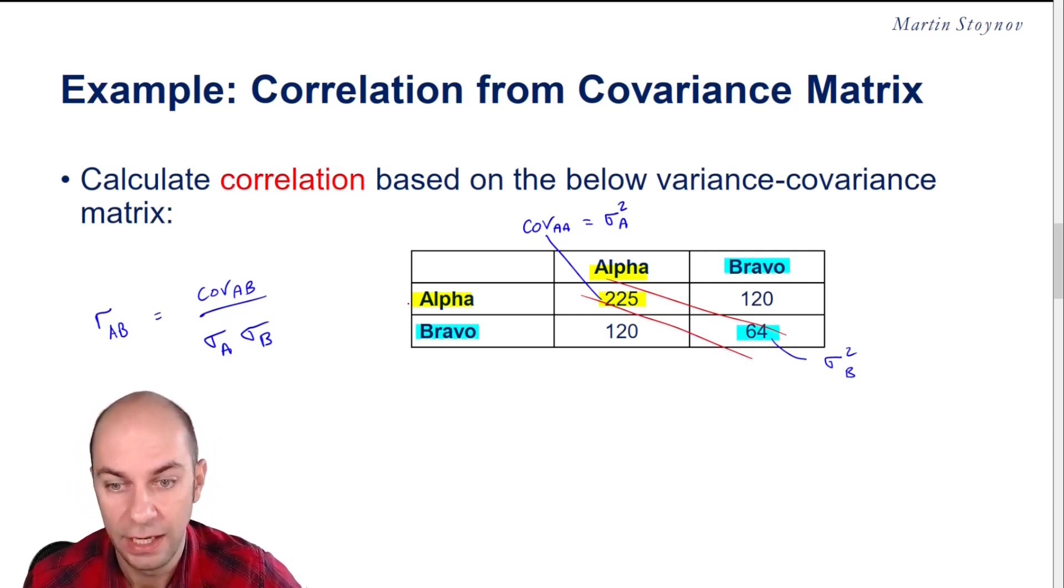Now, obviously, where alpha intersects Bravo, that's going to be the covariance. So that's the covariance A, B. And of course, it doesn't matter in what order you are arranging that, because the covariance relationship is multiplicative.